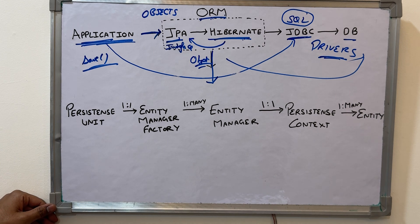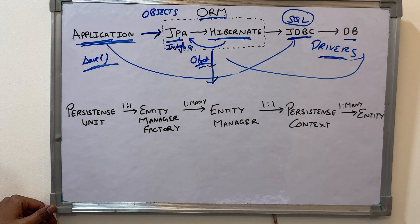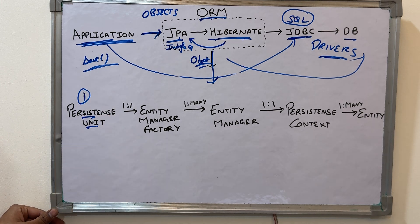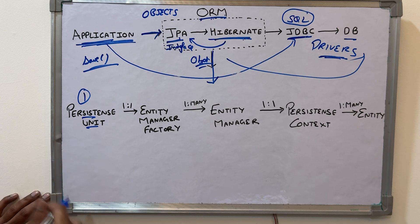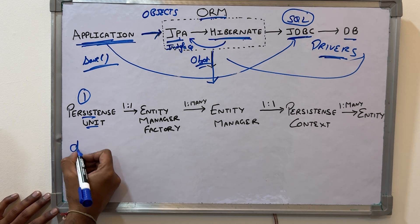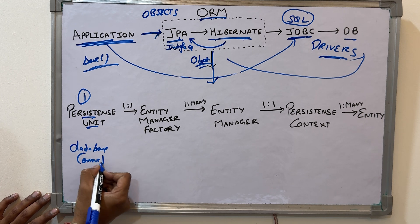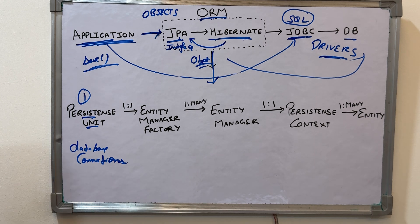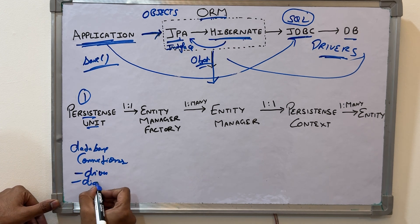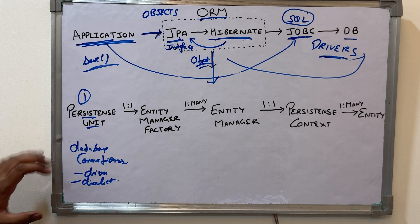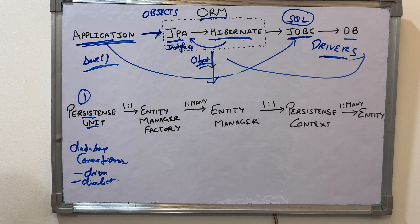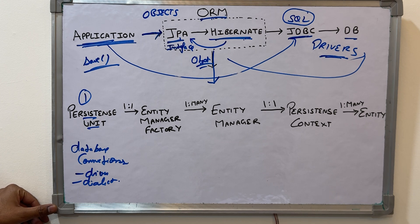Now if we further drill down into the ORM framework, you will see important classes and components. The first part is the Persistence Unit — in Spring Boot you can think of it as the application.properties file. The Persistence Unit contains information regarding your database connection: the driver, the dialect, and all configuration required to connect to a DB.